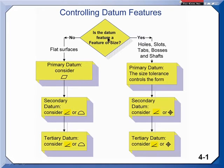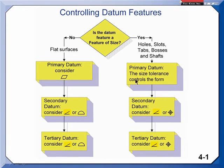Now, if you're dealing with a feature that has size, the size tolerance and the limits of size — you'll remember from chapter 2 — control the form of the feature. So your primary datum feature usually doesn't need a control.